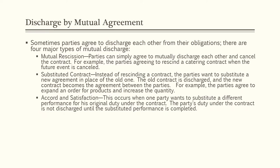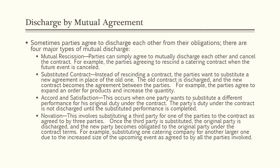Then there is accord and satisfaction. This occurs when one party wants to substitute a different performance for his original duty under the contract. The party's duty is not discharged until the substituted performance is completed. The final type is novation, which involves substituting a third party for one of the original parties to the contract, as agreed to by all three parties. Once the third party is substituted, the original party is discharged and the new party becomes obligated under the contract terms.